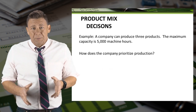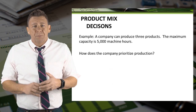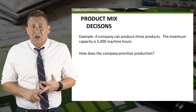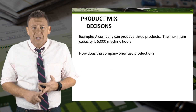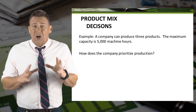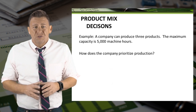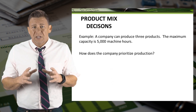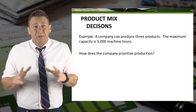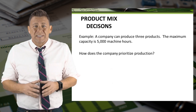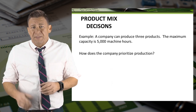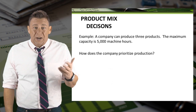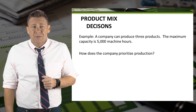For example, a company can produce three products: product A, product B, and product C. The production constraint is 5,000 machine hours. They can't produce any products beyond the maximum usage of 5,000 machine hours. So how do they decide which products to produce?